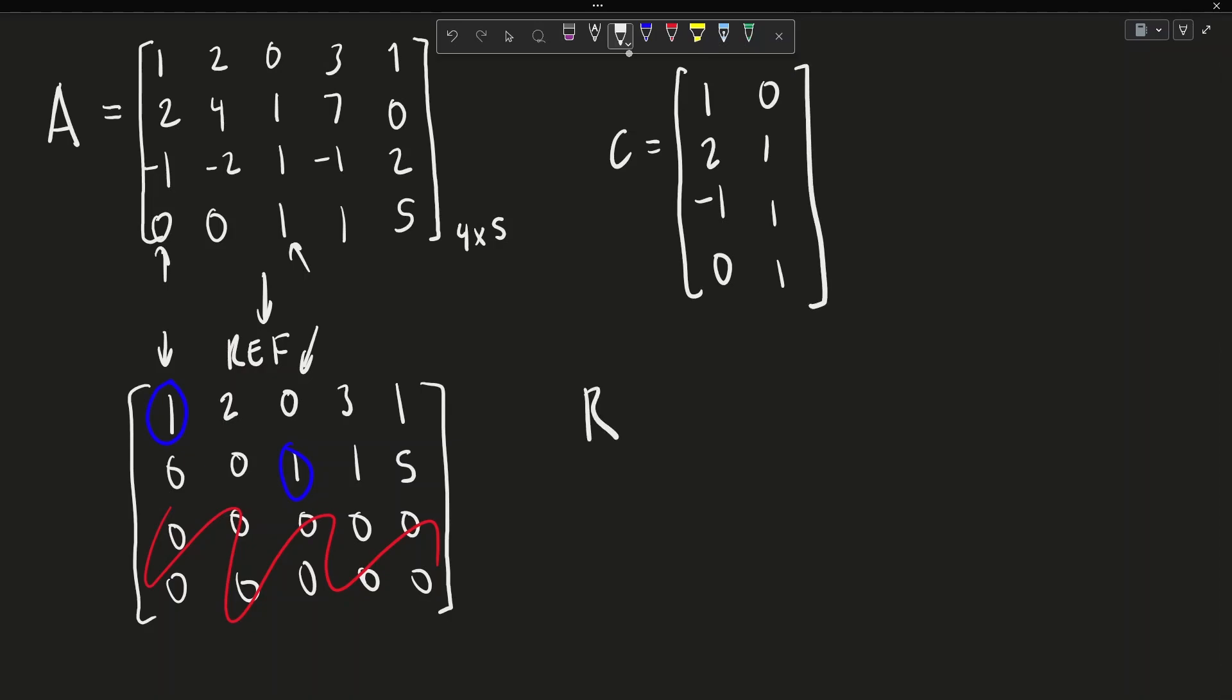R now is taken directly from the row echelon form of the matrix A. And so since we have two zero rows here, we disregard them from the matrix R.